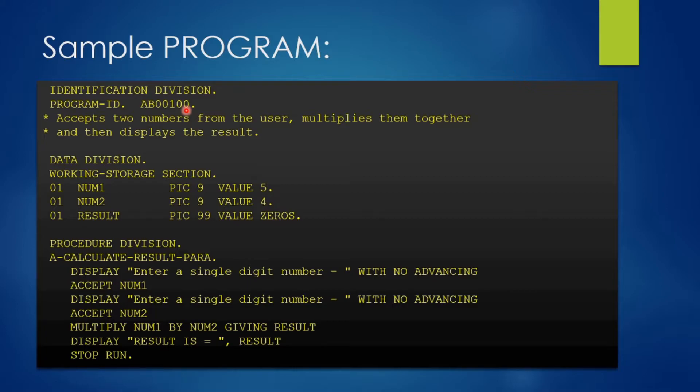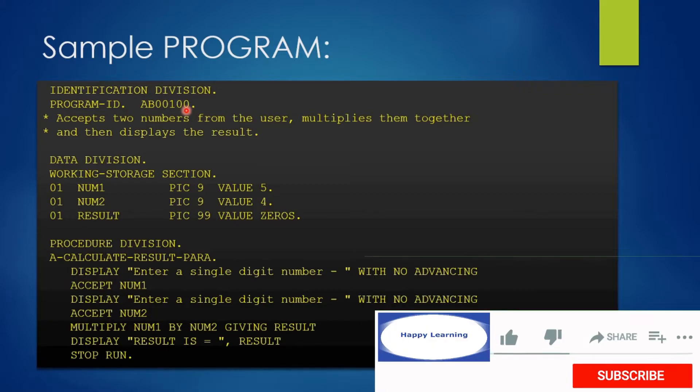So suppose if you are working on any card application system, then you may use the qualifier CA of that application. This will help you distinguish program running between different applications.